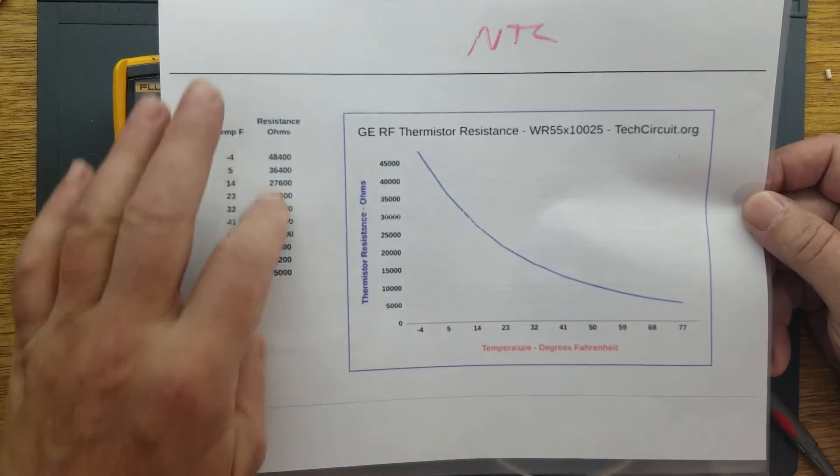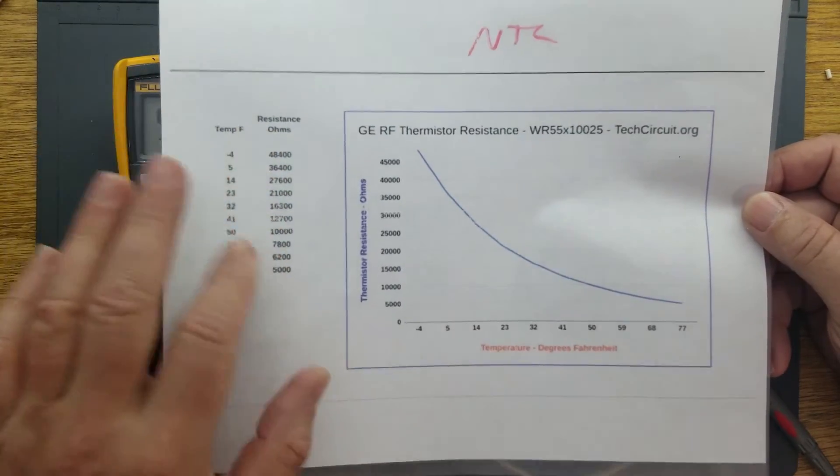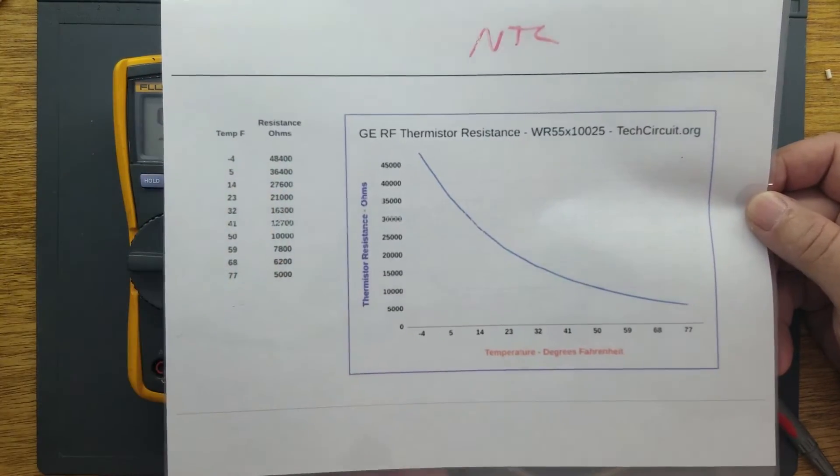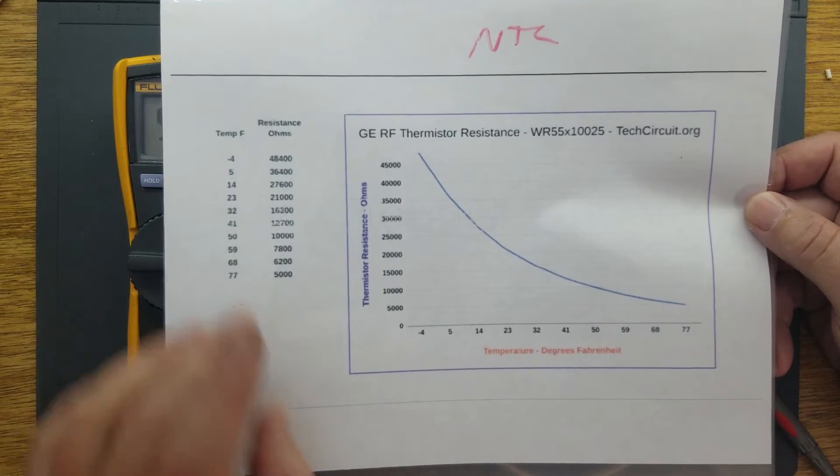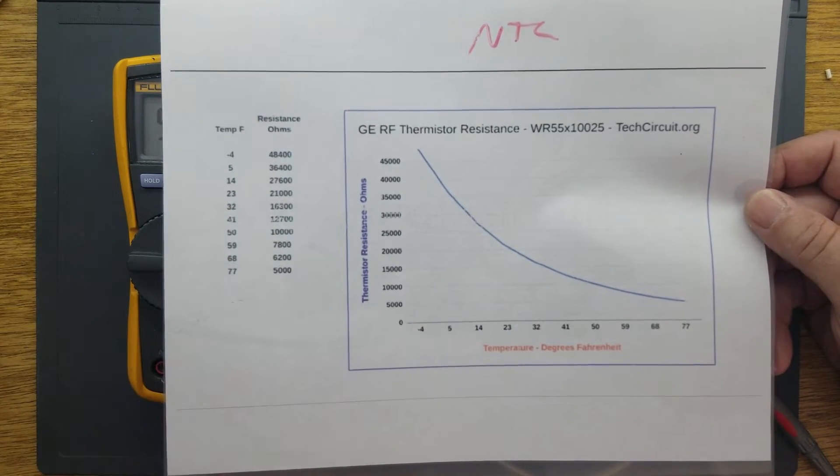A lookup table is essentially you have in your microcontroller a table that has all the temperatures and the resistances for those given temperatures. Actually, there are voltages, and I'll show that in a minute, how that is implemented.